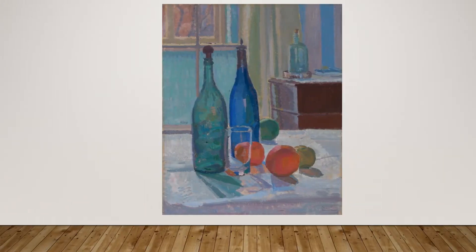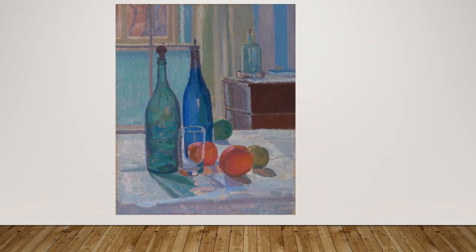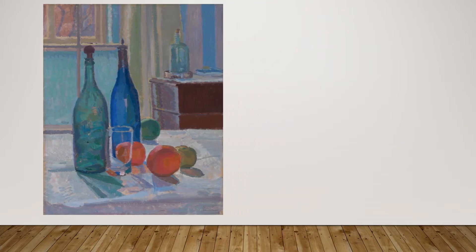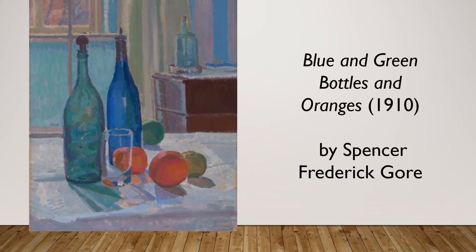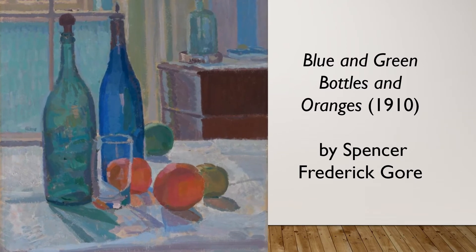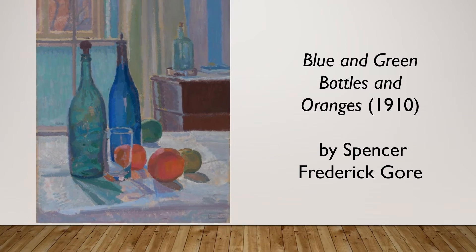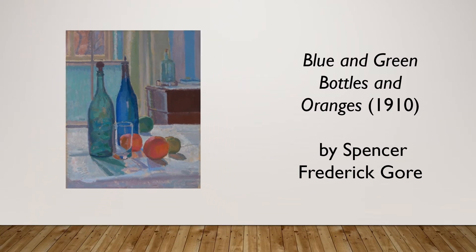Here the artist has used light to make this still life painting appear more realistic, as the objects block the light from the sun and create shadows on the table. You may notice that the apple and orange create darker shadows than the coloured bottles. Do you know why this is?